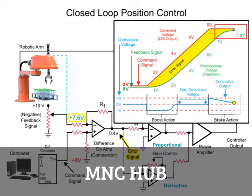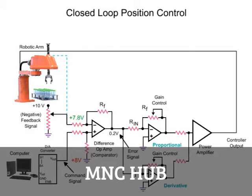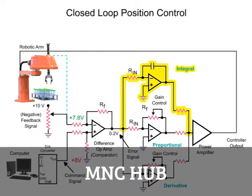Friction and mass of the robotic arm contribute negatively to the system, where the robotic arm fails to reach the desired position. With a reduced error signal due to feedback voltage and command voltage not being equal, a steady-state error condition exists. In this condition, the difference op-amp creates a steady voltage and the arm continues to move. To overcome the steady-state error, an integral amplifier is added to the circuit.